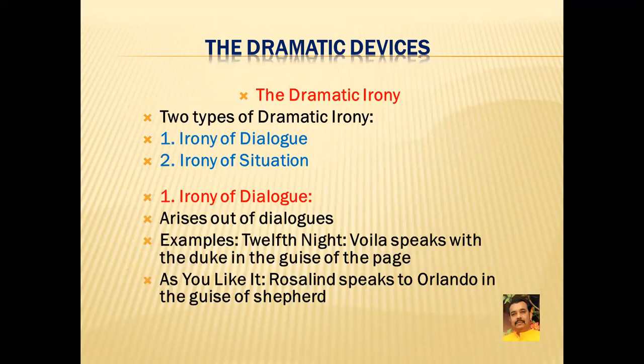Dramatic irony is of two types. The first is irony of dialogue, also called verbal irony, and the second is irony of situation. As the name suggests, if the irony arises out of what is said or spoken on the stage, it is known as the irony of dialogue or verbal irony. In the plays of William Shakespeare, we get ample examples of dramatic irony of dialogue.